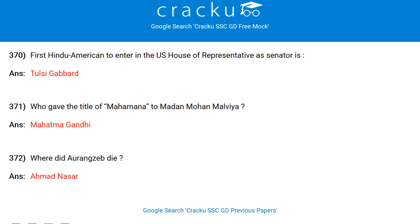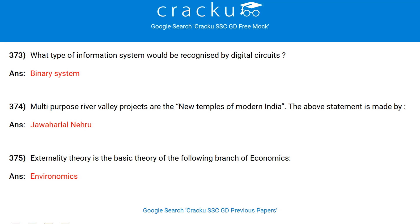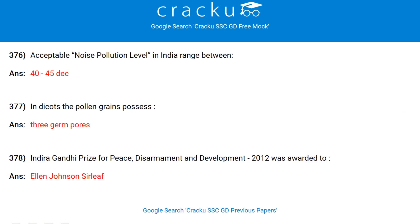The first Hindu American to enter the US House of Representatives as a senator is Tulsi Gabbard. Who gave the title of 'Mahamana' to Madan Mohan Malaviya? Mahatma Gandhi. Where did Aurangzeb die? Ahmednagar. What type of information system would be recognised by digital circuits? Binary system. Multi-purpose river valley projects are the new temples of modern India — this statement is made by Pandit Jawaharlal Nehru.